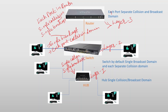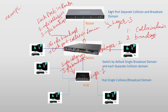The router operates at layer 3. Each port on the router is a single collision domain and a single broadcast domain. So if you have a PC, a router, and hubs connected together, each router port separates both collision and broadcast domains.